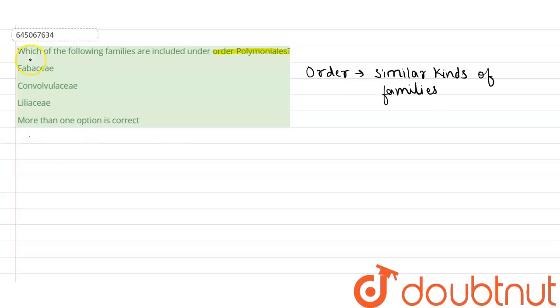Now, Fabaceae is included under the order Fabales, so it is not considered under the order Polymoniales. So this is not the correct option.